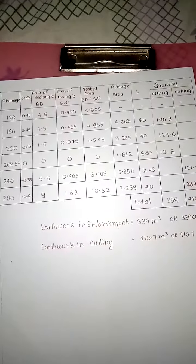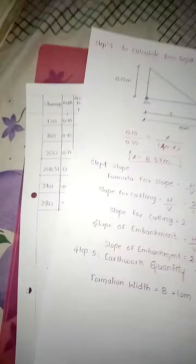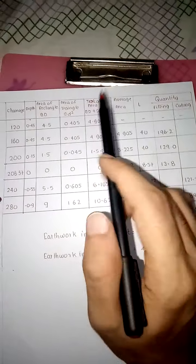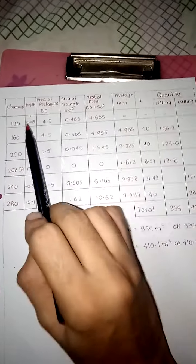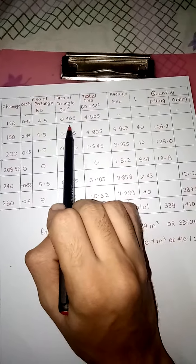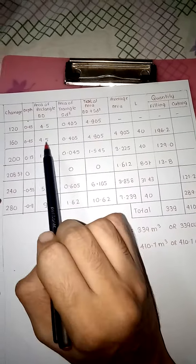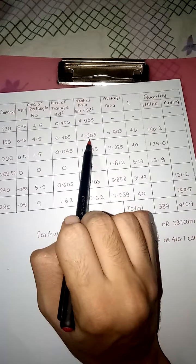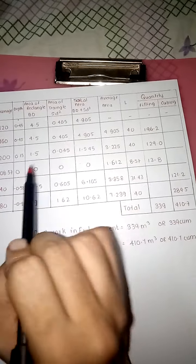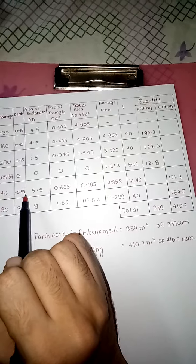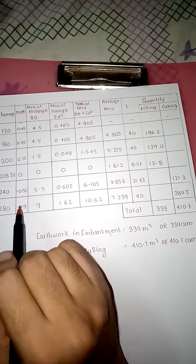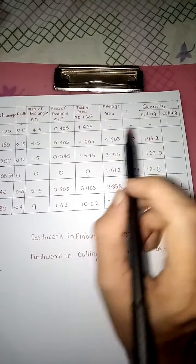Area of triangle: we calculated slopes. Different slopes for cutting and embankment. Slope is 2, so 2 × depth². 2 × 0.45² = 0.405, 2 × 0.45² = 0.405, 2 × 0.15² = 0.045, this is 0, 2 × 0.55² = 0.605, 2 × 0.9² = 1.62.